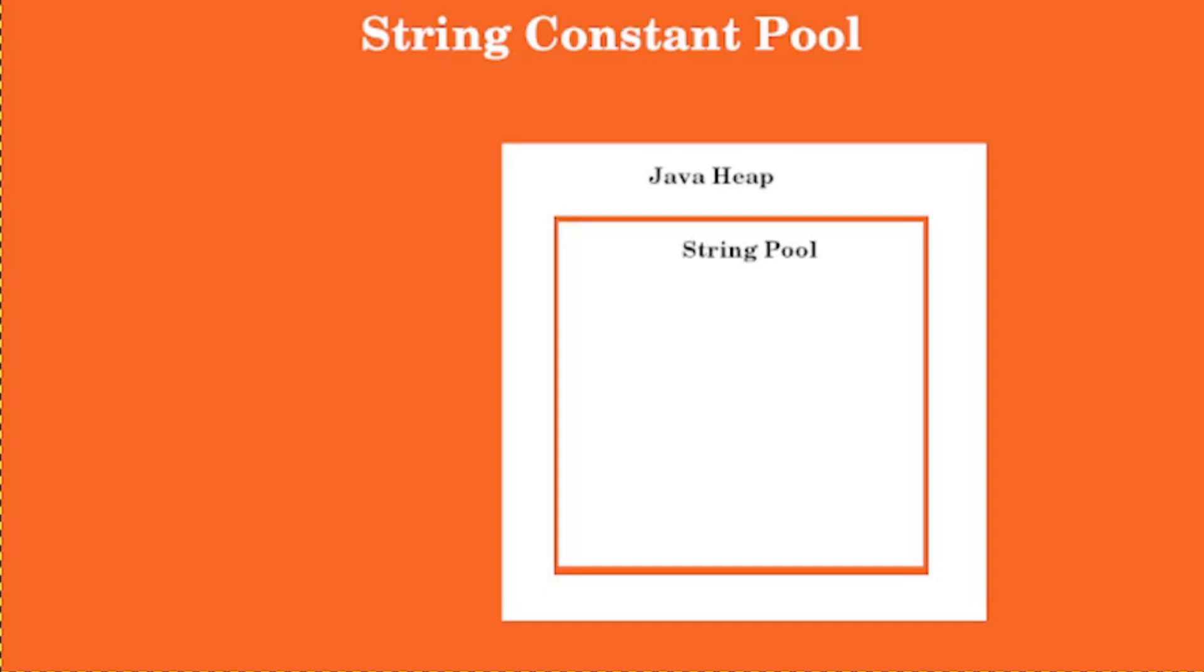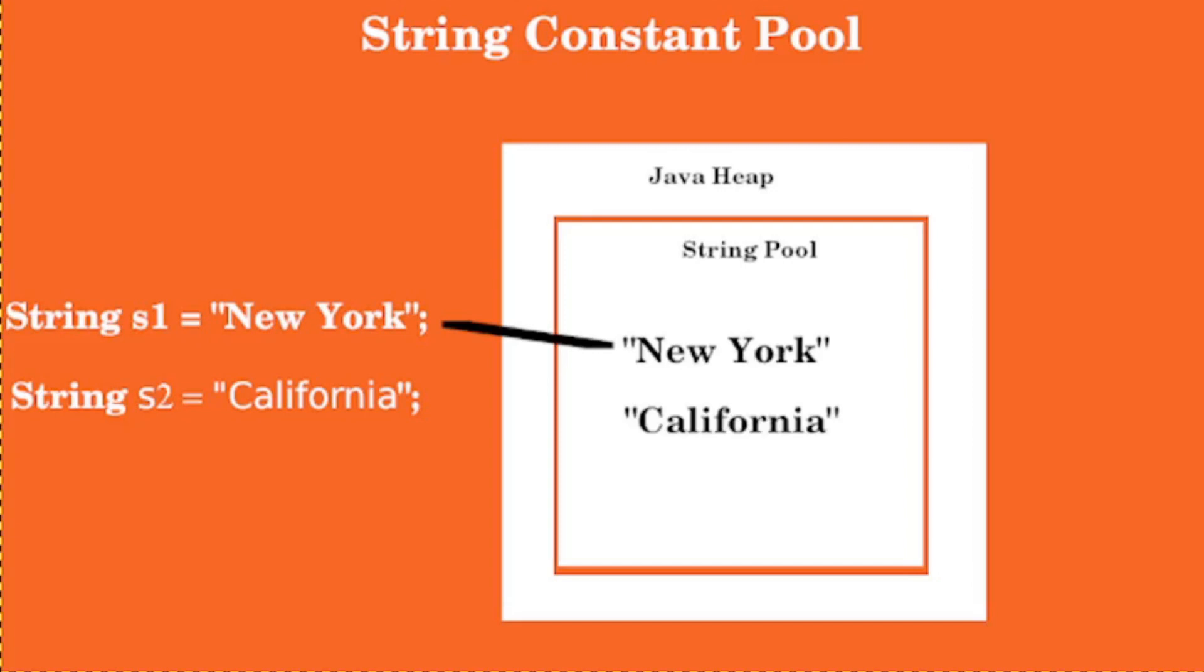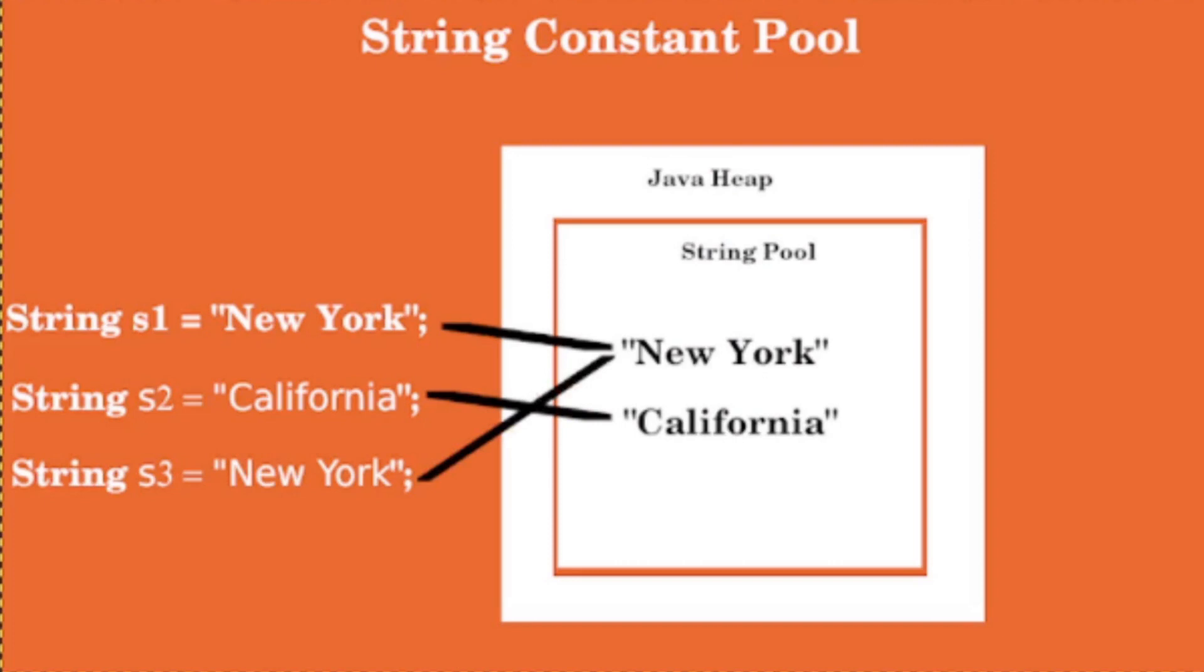Now when the JVM sees the string literal New York, it creates a new string in the string pool and then returns the reference to this string. Next, when JVM executes s2 equals California, it does the same thing. Now look at the string s3. We already have New York in the string pool. So instead of creating a new string, the reference variable s3 points to the existing instance of New York in the string pool. So in this way, JVM creates as few strings as possible by reusing the existing objects.